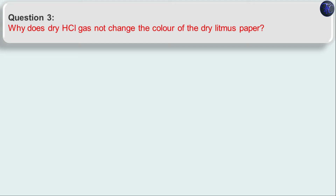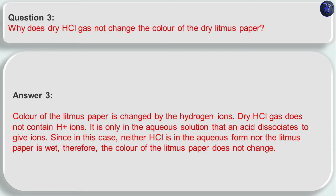As established earlier, acids like HCl dissociate H⁺ ions only in the presence of water. In this case, the HCl gas is dry and the litmus paper is also dry — so water is absent from both. Without water, H⁺ ions cannot be produced; without H⁺ ions, HCl cannot show acidic characteristics; and without acidic characteristics, the litmus paper will not change color. Since neither the HCl is in aqueous form nor the litmus paper is wet, the color does not change.